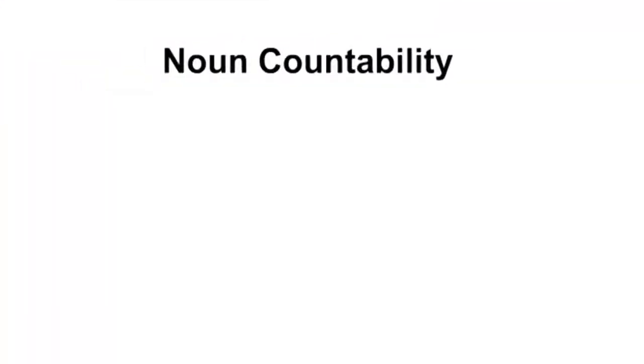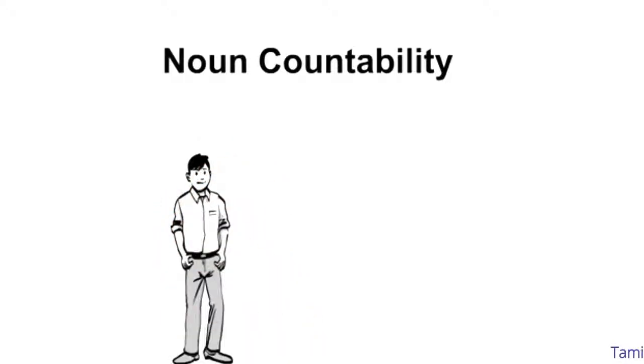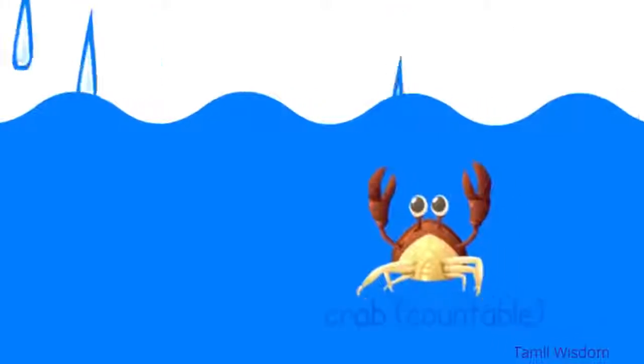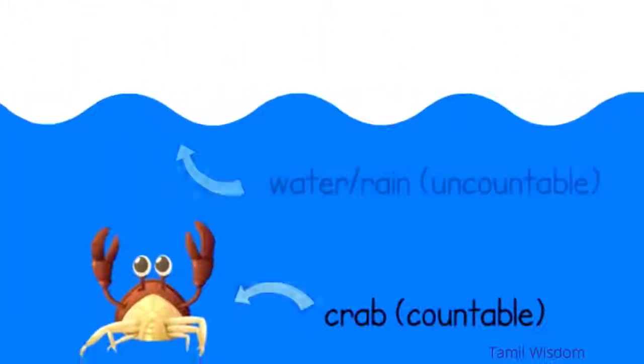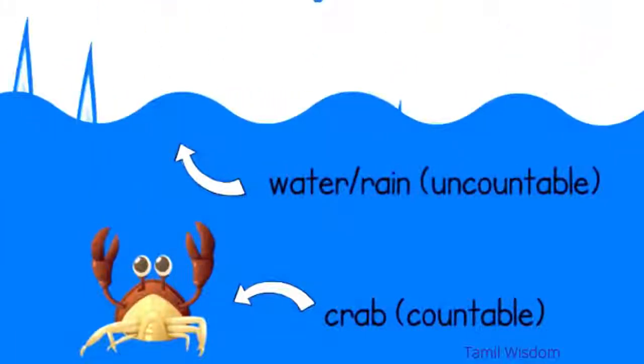We will look at noun countability and how this impacts other aspects of grammar in the sentence. One thing we need to know about nouns in English is whether we can count them or not. Some nouns are countable, some uncountable, and some nouns can be both.